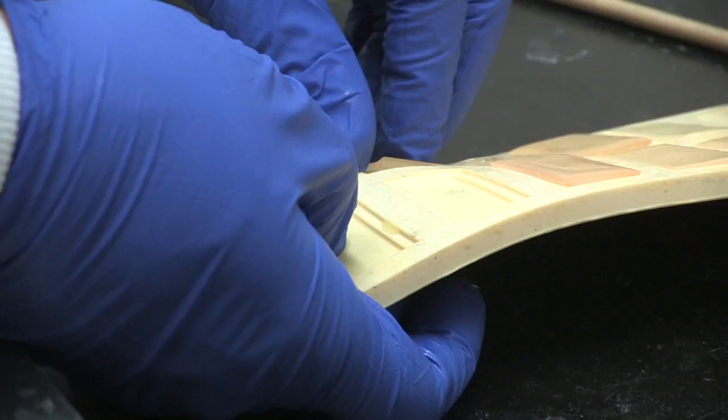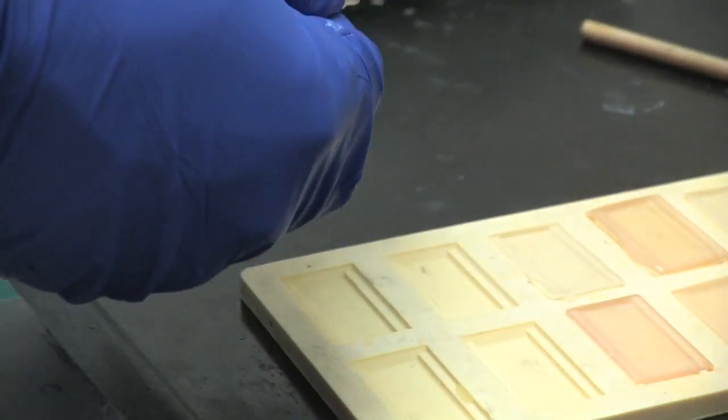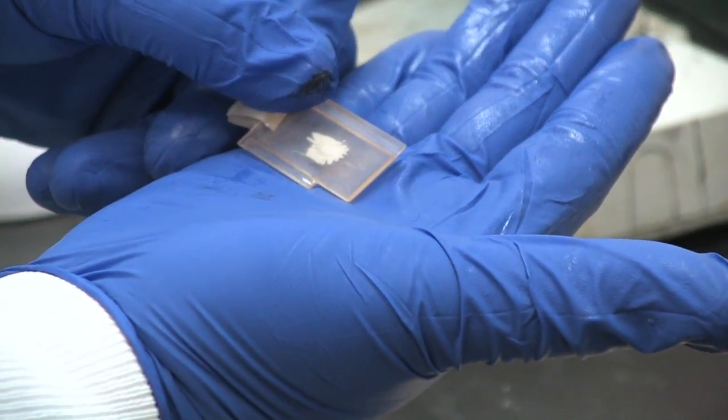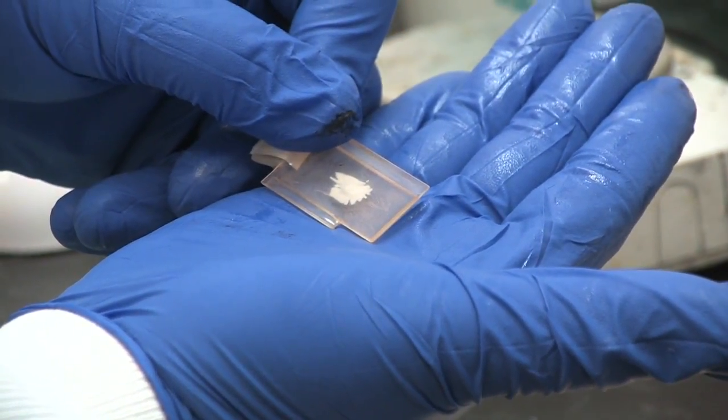This video demonstrates methods for embedding individual otoliths. The entire process requires two to three days and will produce individual molds to be sectioned and used for age determination.